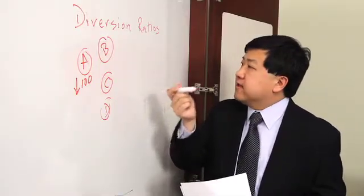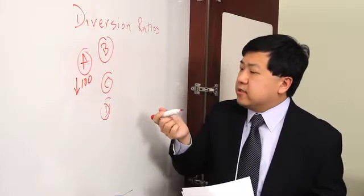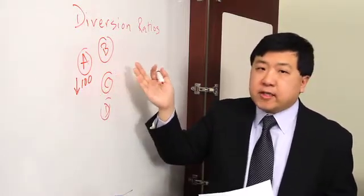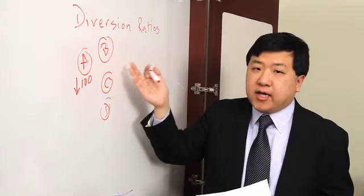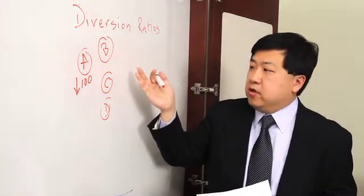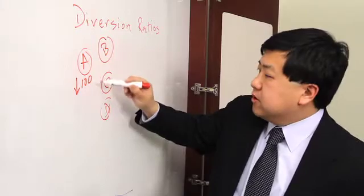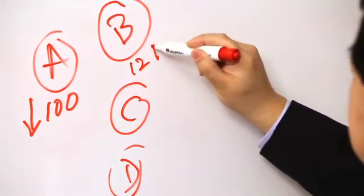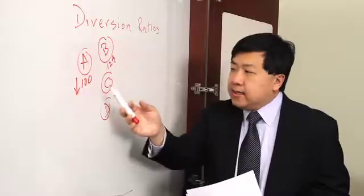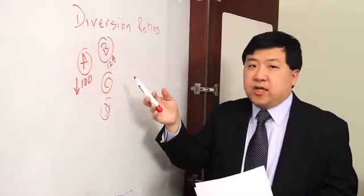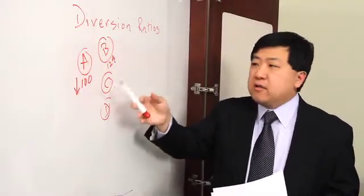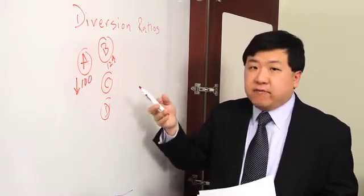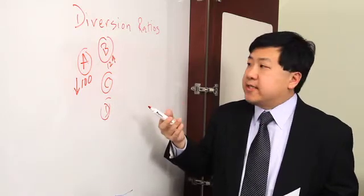The question, the definition of the diversion ratio is: of the sales lost by A, what proportion go to B, go to the other product owned by one of the merging parties. So if I lose 100 units of A, and let's say we know that B goes up by 12 units, that's it. That's your diversion ratio. 12 of 100, 12 of the 100 lost units of A go to B, and that's your diversion ratio, 12 of 100 or 12 percent.